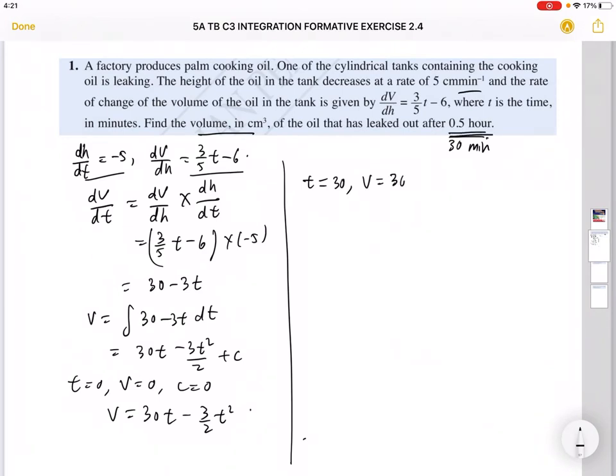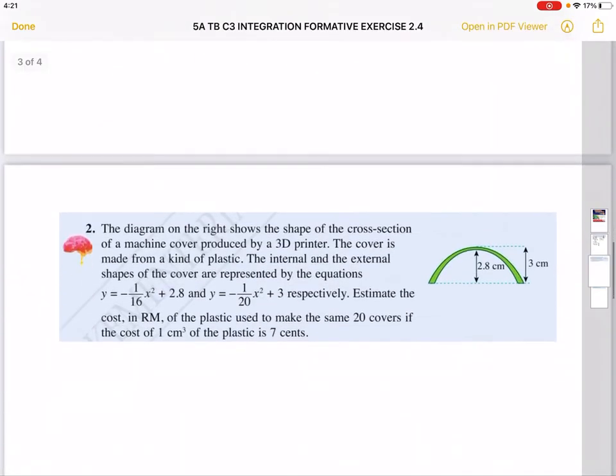So now when t equals 30, after 0.5 hours or 30 minutes, your volume will be 30 times 30 minus 3/2 times 30 squared. So this will be negative 450. We are talking about volume that leaks out. So initially the volume that leaks out is zero. After 30 minutes, the total volume that leaks out is 450 cm³. Now let's move on to question number two.